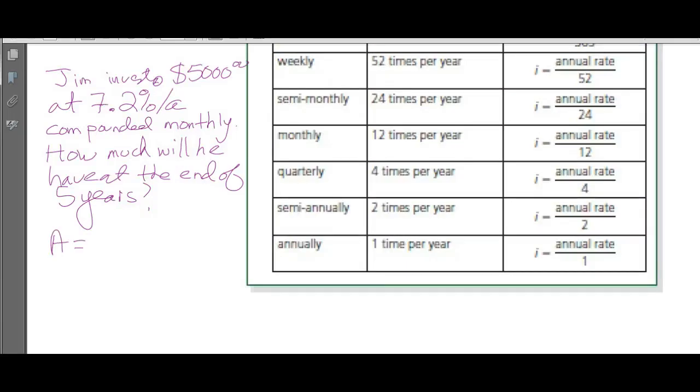We're going to use the formula: A = P × (1 + i)^N.